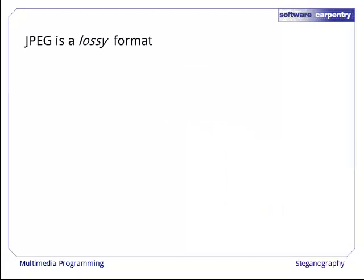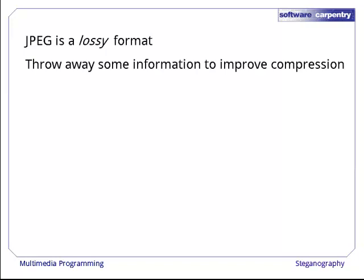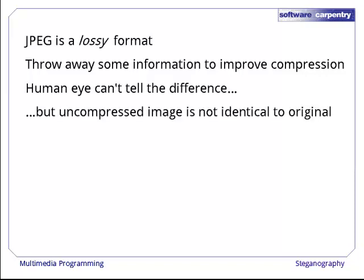The answer lies in the fact that JPEG is a lossy format. It changes or throws away information in order to improve compression. Human eyes can't tell the difference between the original and JPEG'd images. Its algorithm is carefully designed to ensure that. But it does mean that the values we get back after we save and reload the image aren't exactly the ones we intended to write out.